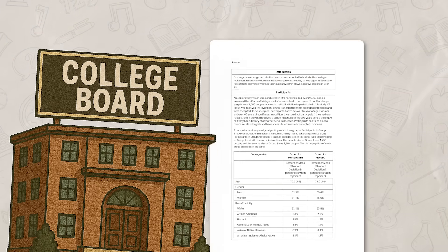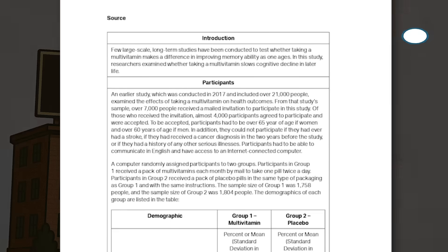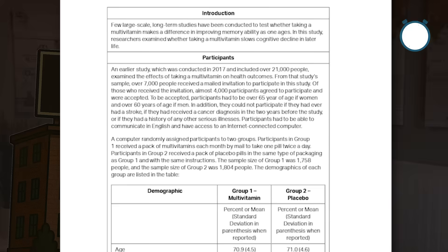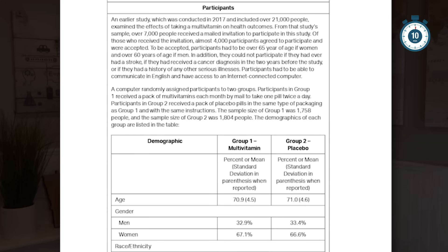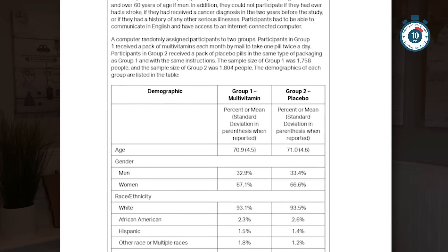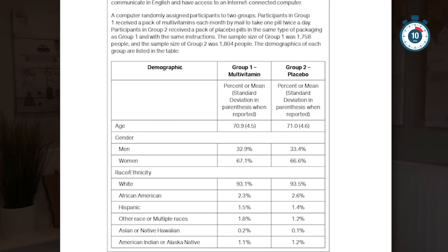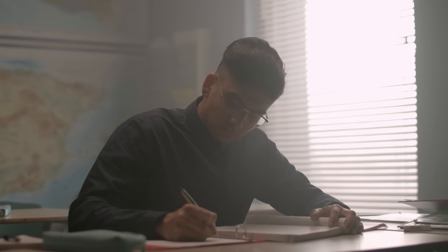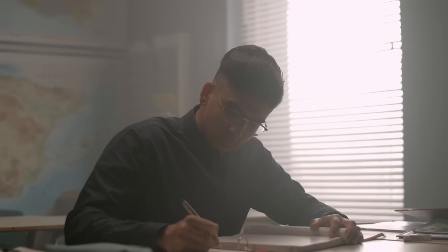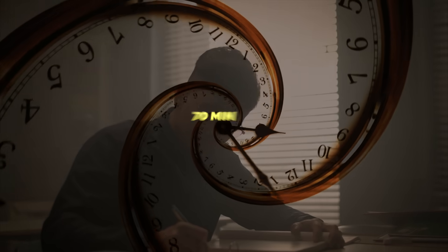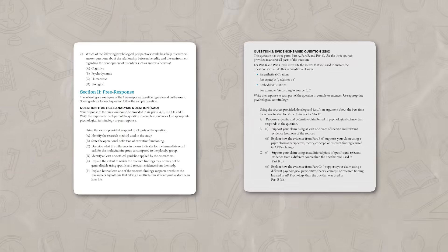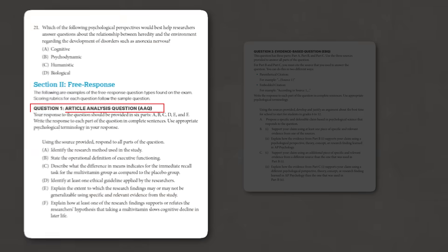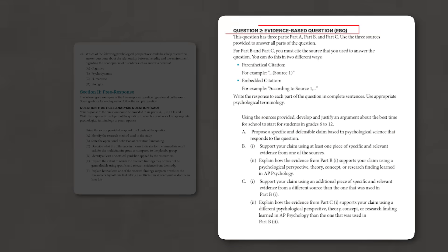College Board recommends that you take 25 minutes to answer your AAQ and spend 10 of that 25 minutes reading the prompt and study. It is up to you on how much time you take, but just remember you only have 70 minutes in total to answer both the AAQ and the EBQ.